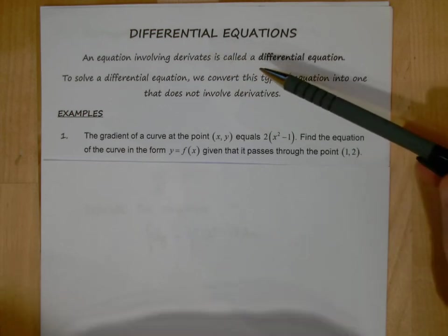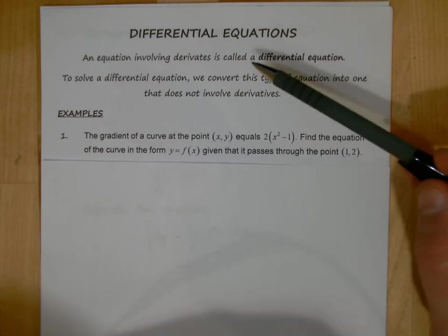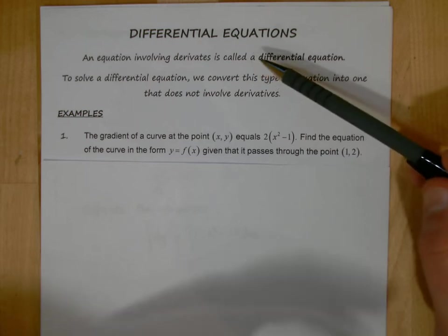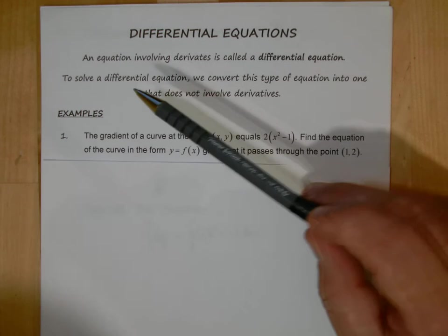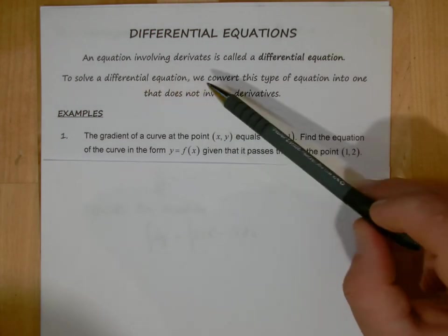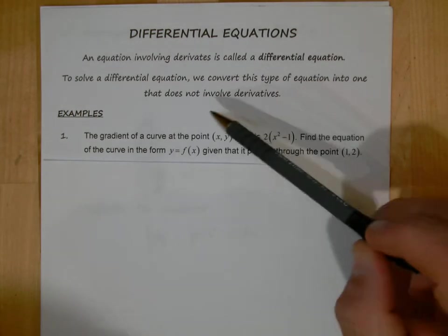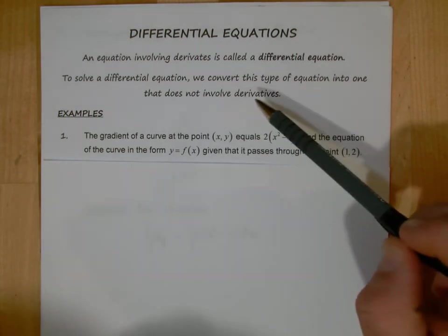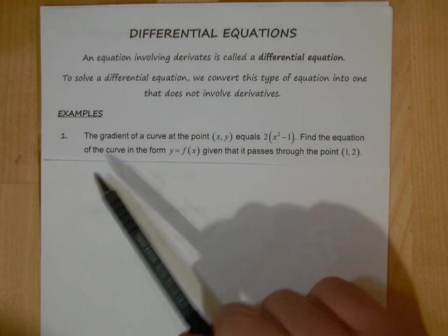Or dx/dt, here's another good example, or dv/dt. The variables can change, it doesn't have to be x and y, but if you've got that in there it's known as a differential equation. Now to solve a differential equation, we've got to convert it into an equation that does not involve derivatives, so the dy/dx will disappear. That's how we solve a differential equation.